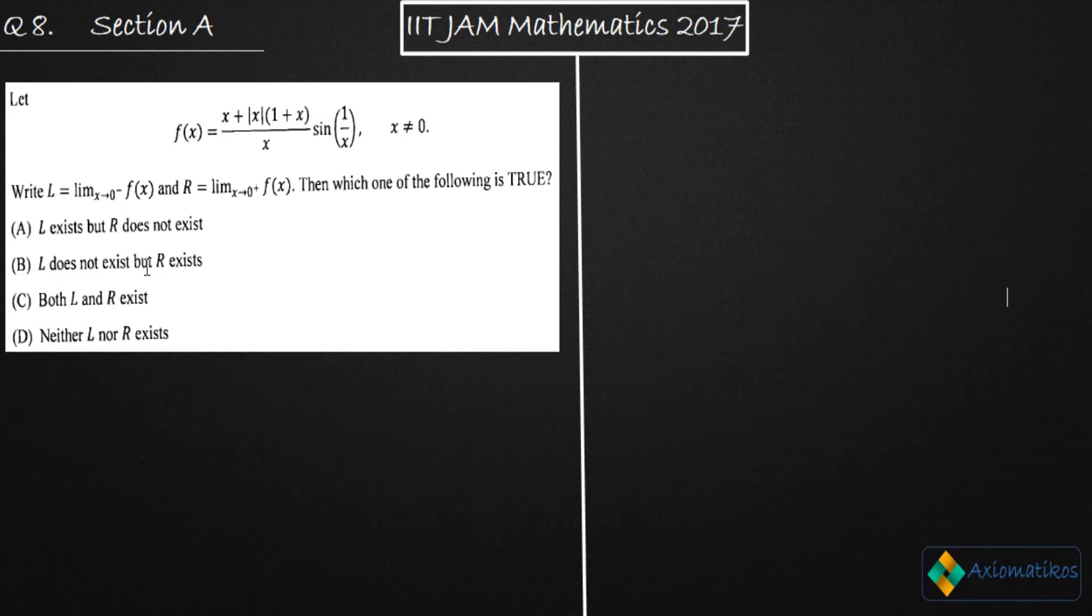Now the question is asking us that let L represent the left hand limit of f(x) at zero and R represent the right hand limit of f(x) at zero, then which of the following is true. The question talks about whether L will exist or not, whether R will exist or not. This is a basic question, so let me start.